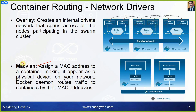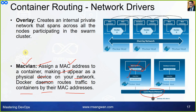The fifth driver is macvlan. This assigns a MAC address to the container, making it appear as a physical device on your network. Docker daemon routes traffic to the containers by their MAC addresses. When using macvlan, the physical network can reach out to the container directly using the container's IP address, which appears as a physical address of the machine. Those are the five drivers.